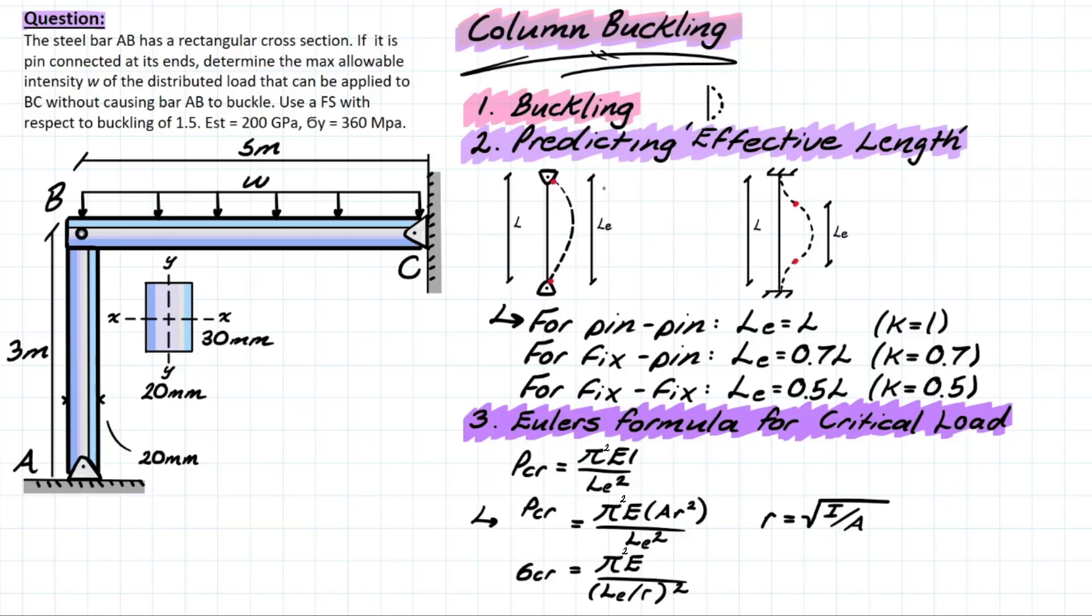We would have inflection points for the fix-fix case where you would be bowing in one direction between those points and then the opposite in the other because of that restricted rotation. Now relating this to a column, everything between these inflection points is going to be your effective length. That effective length pretty much means where buckling is most likely to occur.